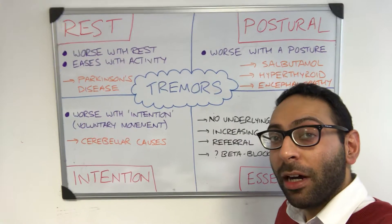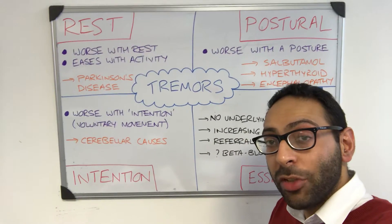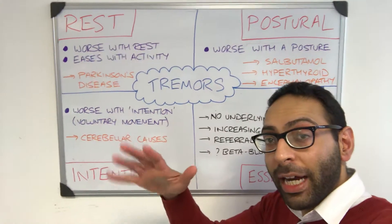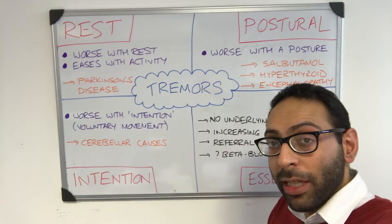Let's talk tremors. Tremors are involuntary rhythmic oscillations or movements of part of a body, usually your hand but it can be other parts of the body as well.